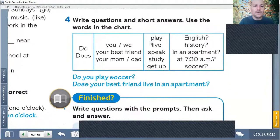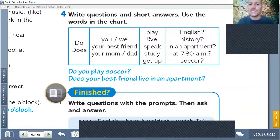Then, we're going to, exercise number four, says to write questions and short answer, use the word in the chart. There are many words over there. So you're going to write sentences. Do you play soccer? Does your best friend live in an apartment? Does your best friend speak English? You can write as many as possible. Puedes escribir todas las que sean posibles. Very good.